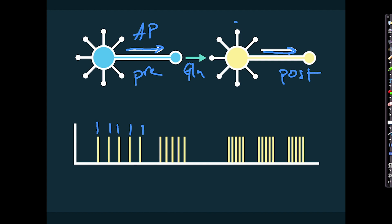These ones are quite slow with a bit of time between them, these are quite fast. And then in the post-synaptic — let's separate those out — so these are the pre-synaptic and this is the post-synaptic. This triggers perhaps a series of action potentials in the post-synaptic.